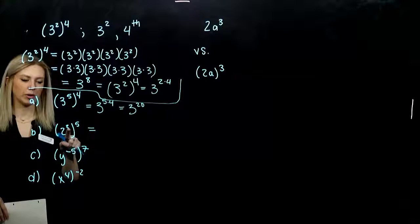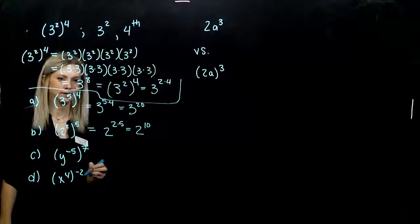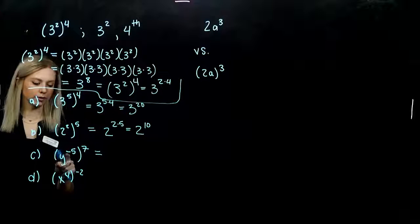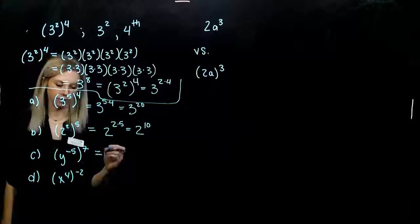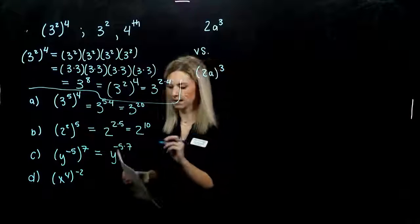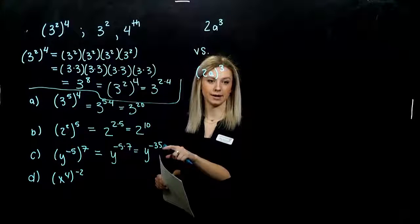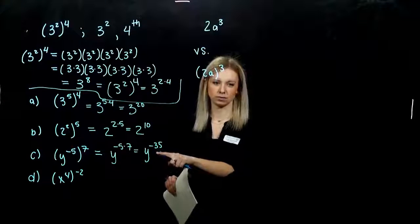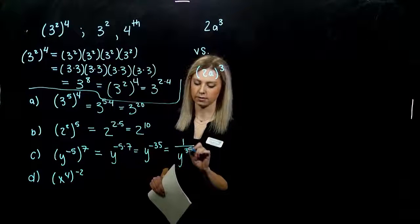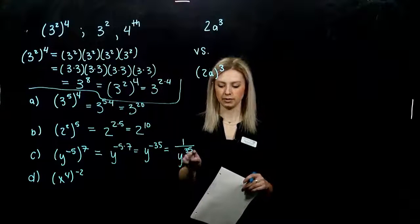For part b, raising a power to a power — take our base and multiply the exponents. This is really two to the tenth. We want positive exponents; we have positives, so we don't have to do anything else. For part c, again raising a power to a power, we multiply those. Our base isn't changing. But when we multiply negative five and seven, we get negative thirty-five. We don't want negative exponents, so we rewrite as one over y raised to the positive thirty-fifth.